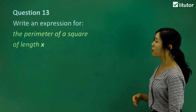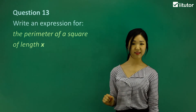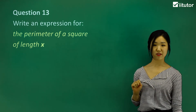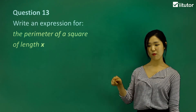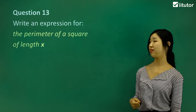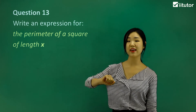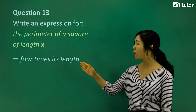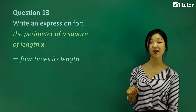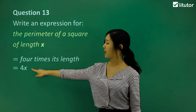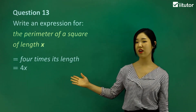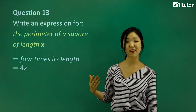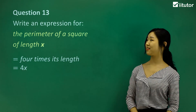Question thirteen: write an expression for the perimeter of a square of length x. A square has four equal sides, so it has four sides of equal length x. If there are four of the same length, it would simply be four times the length. They tell us the length is x, so it's 4x. You don't have to write the multiplication sign in between, because if there's nothing in between it means multiplication. So 4x is the answer for question thirteen.